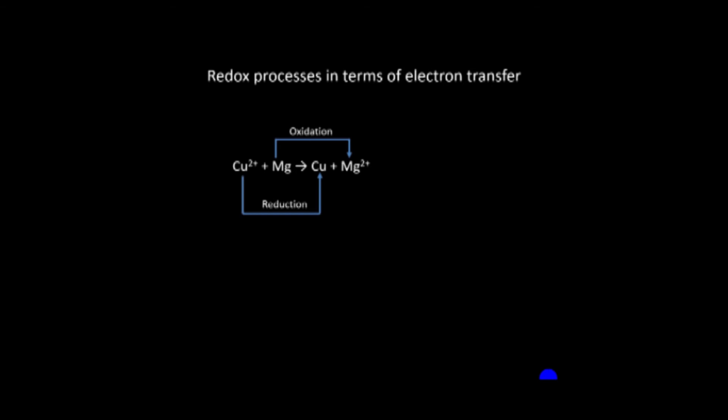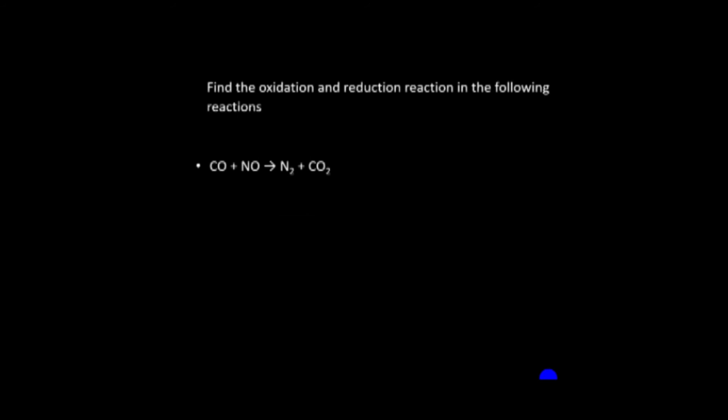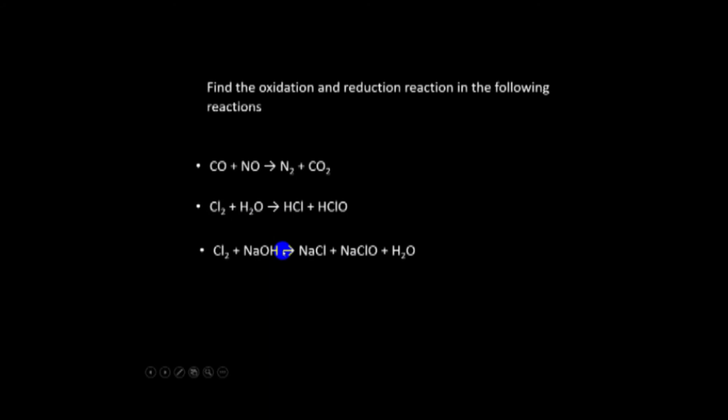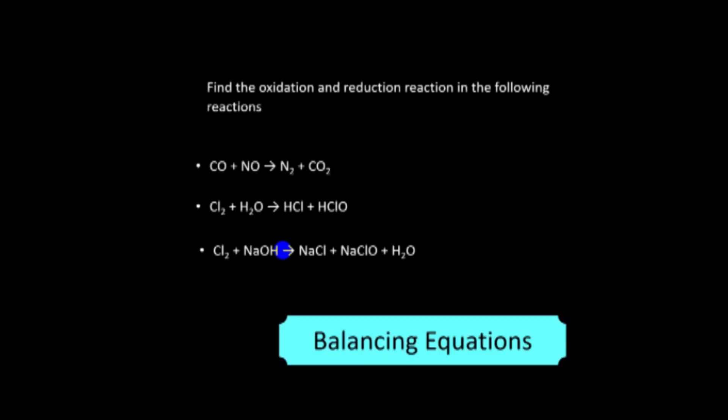In a practice reaction, carbon goes from plus two on the left to plus four on the right — this is oxidation. Nitrogen goes from plus two on the left to zero on the right — this is reduction. For the reaction of chlorine with water and with sodium hydroxide, the same chlorine is both oxidized and reduced — these last two reactions are disproportionation reactions. Hydrogen, oxygen, and sodium show no change in oxidation number.